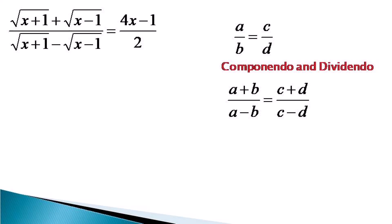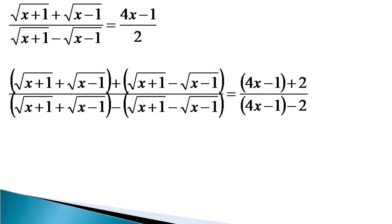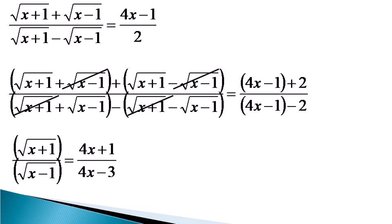Let us apply componendo and dividendo to this equation, which transforms it into quite a large expression. But looking at the numerator on the left-hand side, root of x minus 1 gets cancelled, and in the denominator, root of x plus 1 gets cancelled. So the expression reduces to: root(x+1) over root(x−1) equals (4x+1) divided by (4x−3).